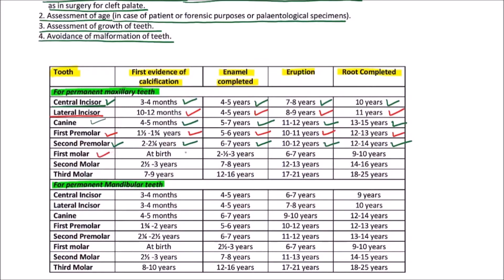For the maxillary first molar, the first evidence of calcification occurs at birth, enamel is completed by 2.5 to 3 years, eruption occurs by 6 to 7 years, and the root is completed by 9 to 10 years.